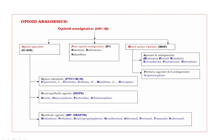Next, semisynthetic agents. The drugs are HOPE. H — heroin. O — oxymorphone. P — pholcodine. E — ethylmorphine.